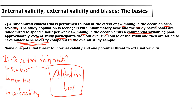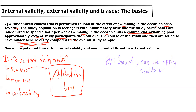In terms of external validity, we remember that external validity is related to the generalizability of the study results — basically, can we apply the results to other populations? The two main threats to external validity include special populations and special treatments or exposures.